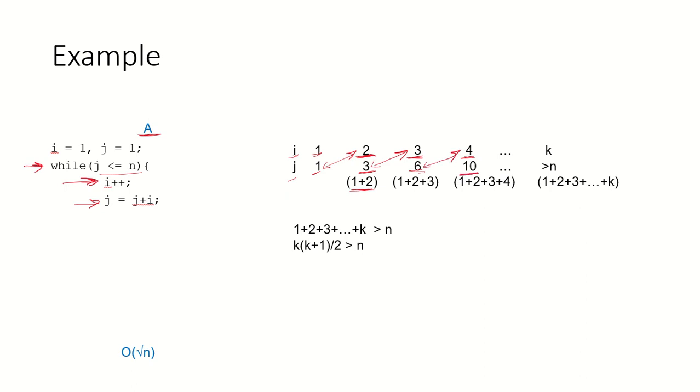This will go on till the time j becomes larger than n and when will that happen? It will happen when i becomes k and we don't know the value of k.